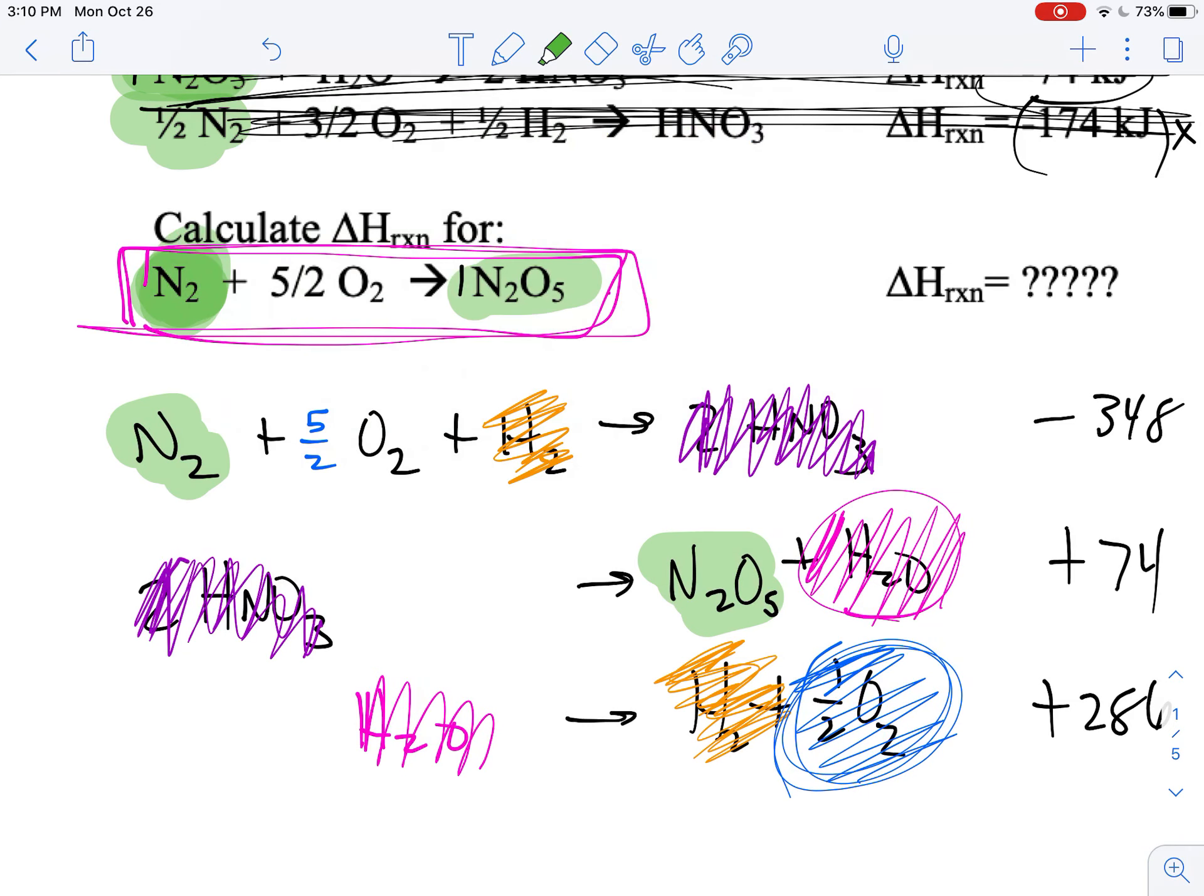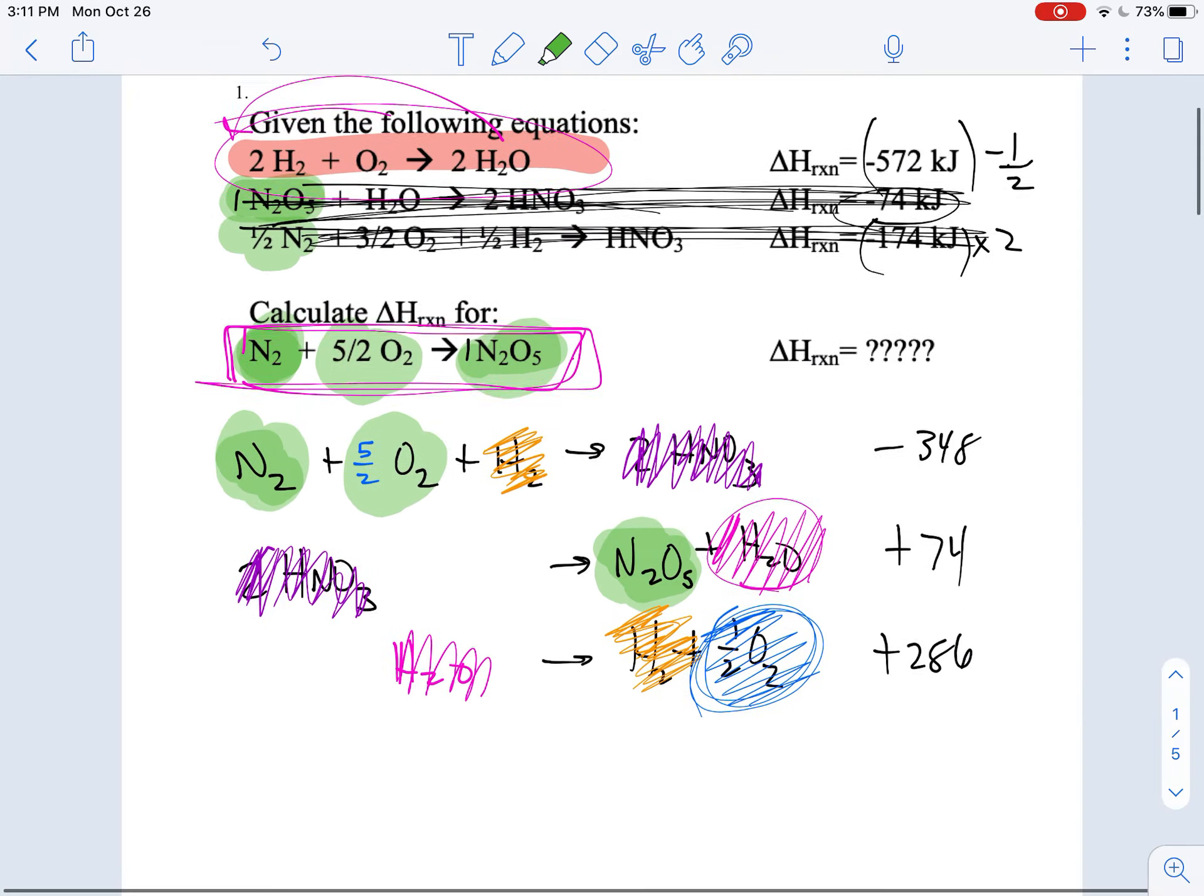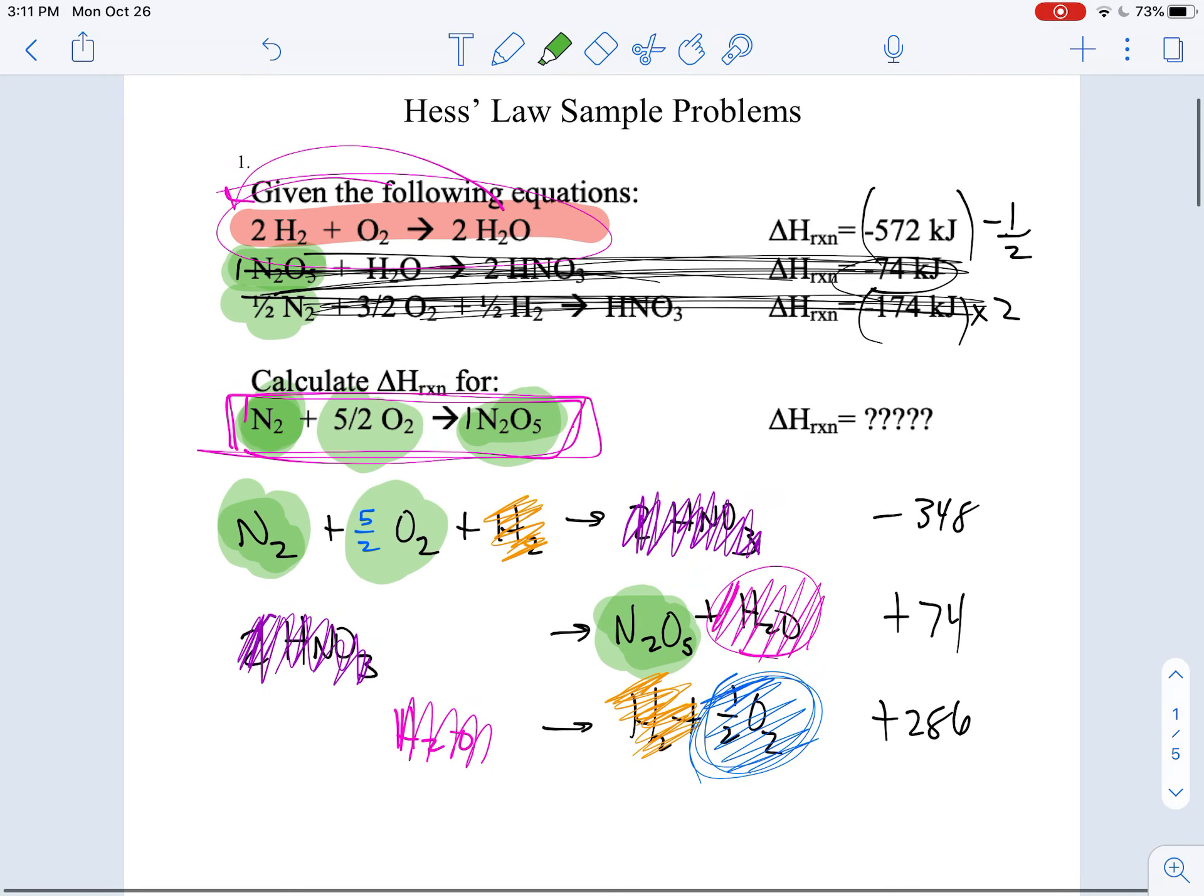I have got my nitrogen. I've got five halves oxygen. And I've got my N2O5. So by using these three equations, I now have the equation that I want.